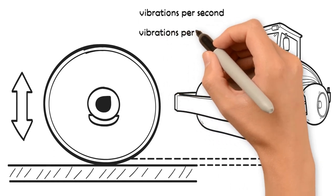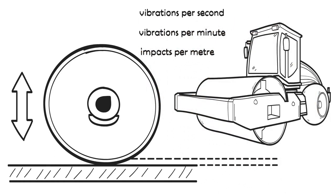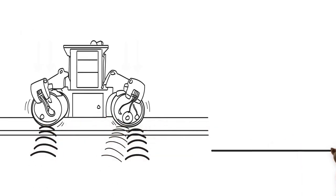Vibration per minute, VPM, or impacts per meter, IPM. The important thing to know about vibratory frequency is its relationship to the machine's working speed.